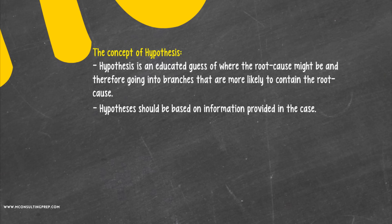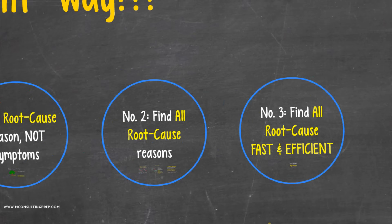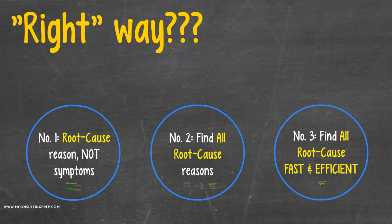So to summarize, a good method to approach and tackle a business problem has three components. Number one, look for the root cause reason and solve it, not just the symptoms. Number two, look for the root cause by breaking down the big problem into smaller pieces in a MECE way. Number three, use Hypothesis to prioritize pieces that most likely contain the root cause.